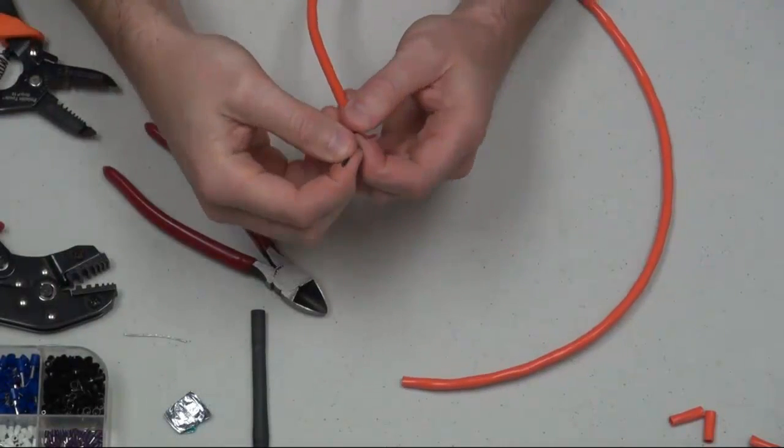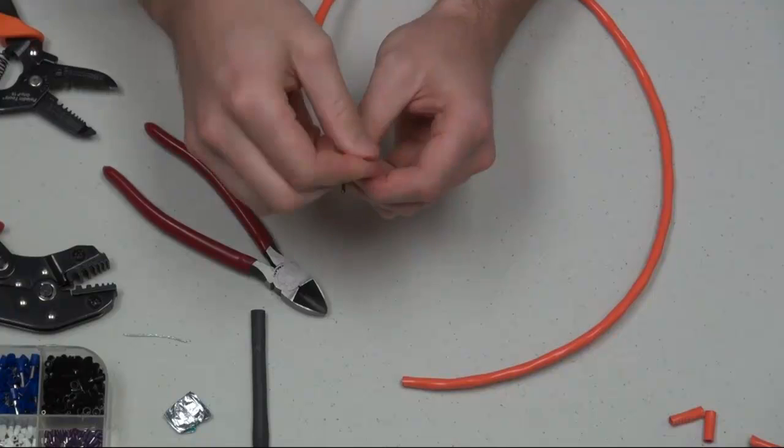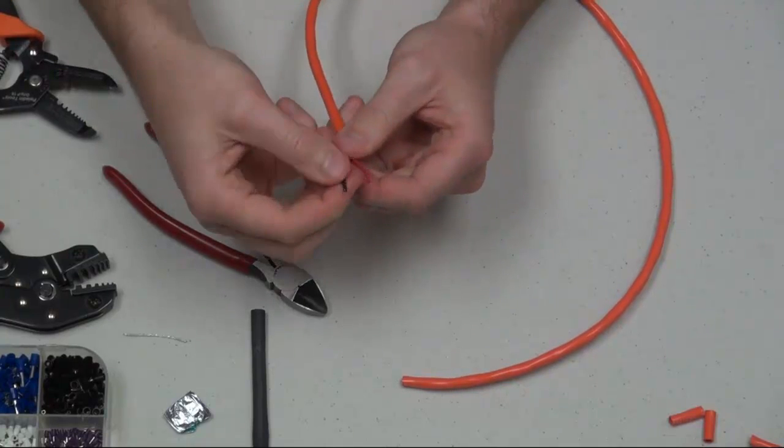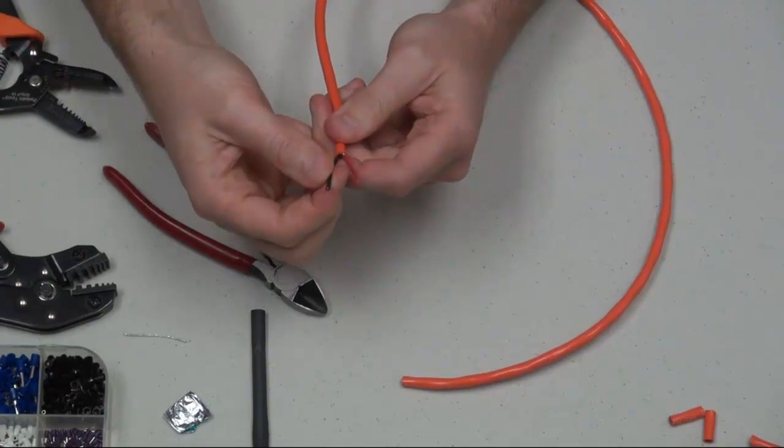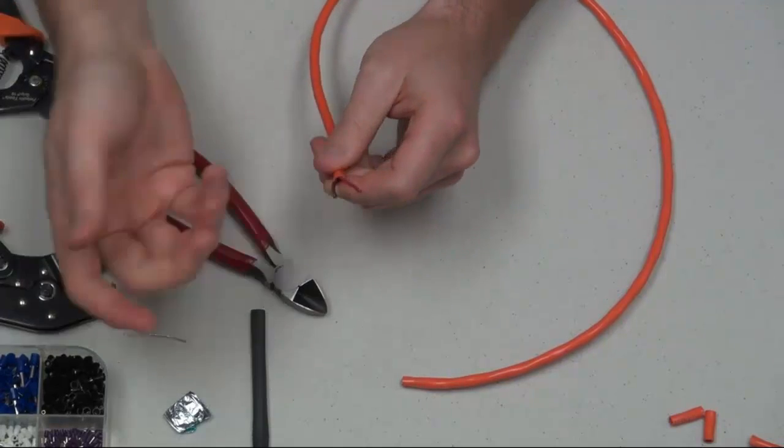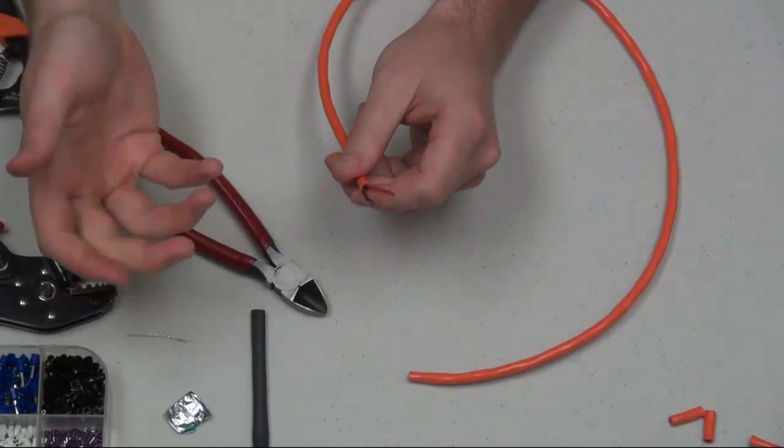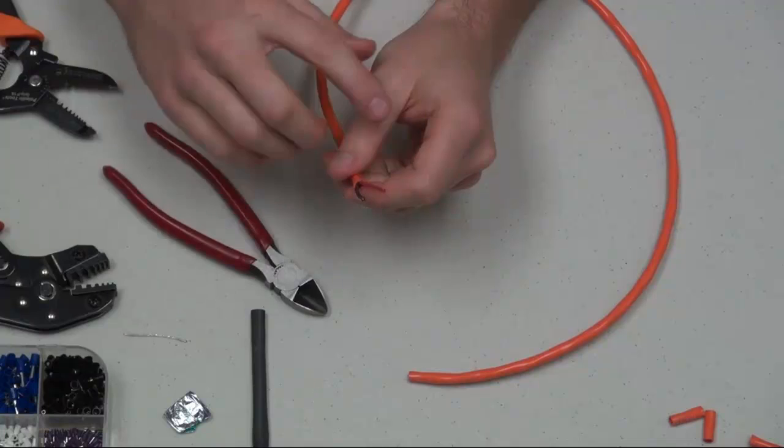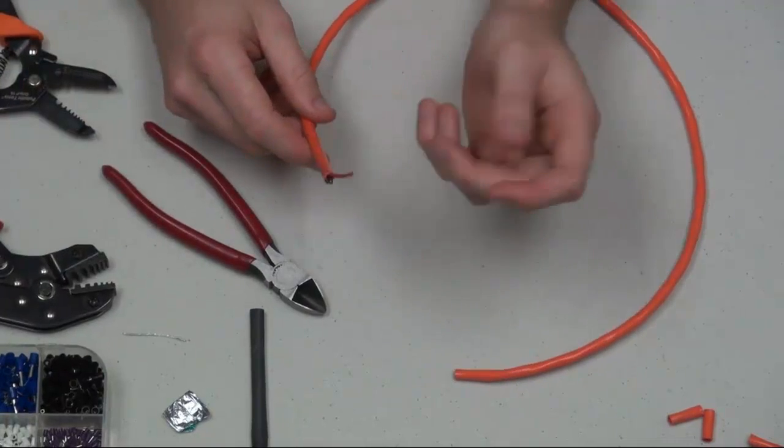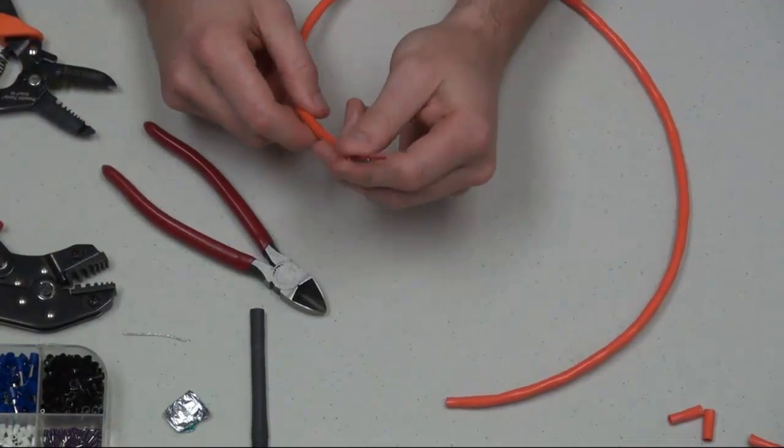Next, now you have your two exposed wires. In this case we're using a red and black wire in here. But again, it could be orange, it could be blue, or it could be orange and brown. So those are typically the popular colors.